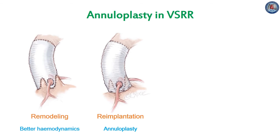Whereas the remodeling technique has the advantage of preserving the geometry of the three sinuses of Valsalva and its resultant vortical flow, as well as maintaining a dynamic expansile root, it does not on its own address the annulus. A dilated annulus of more than 25 mm has been shown to be a risk factor for recurrent AI and re-operation after the remodeling procedure alone, for both bicuspid and tricuspid valves. This is not a problem with the re-implantation technique, which includes an annuloplasty through the proximal suture line of the tube.